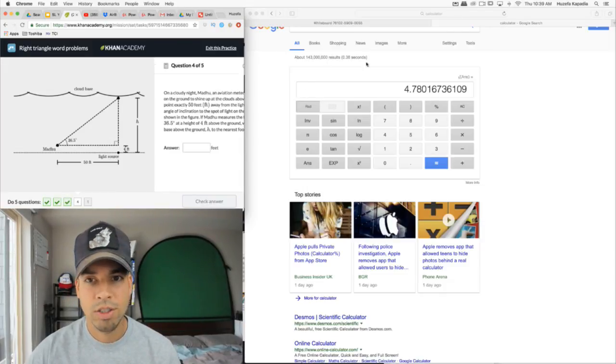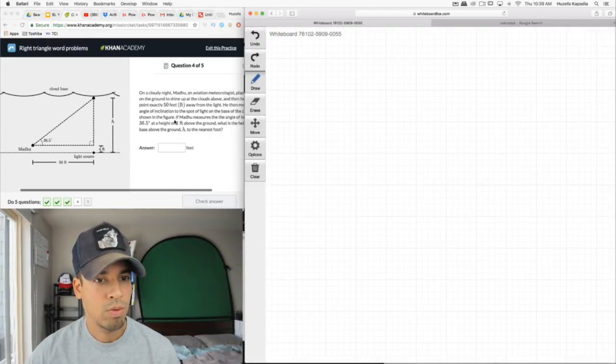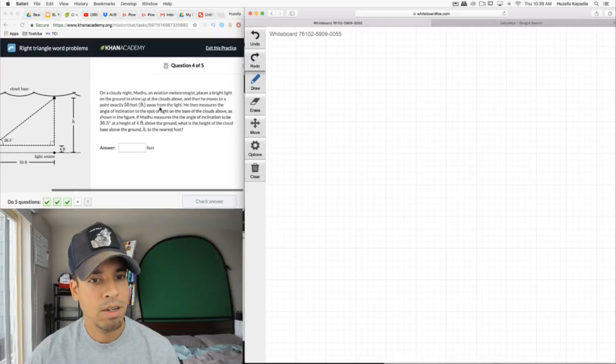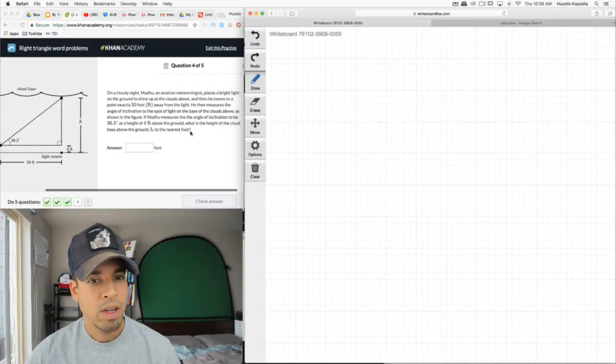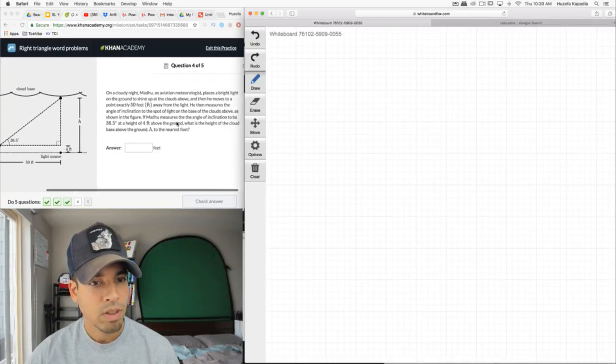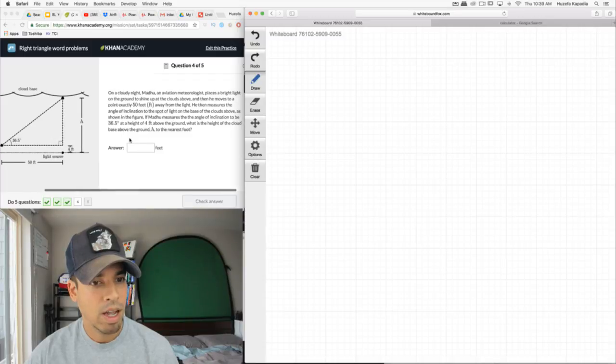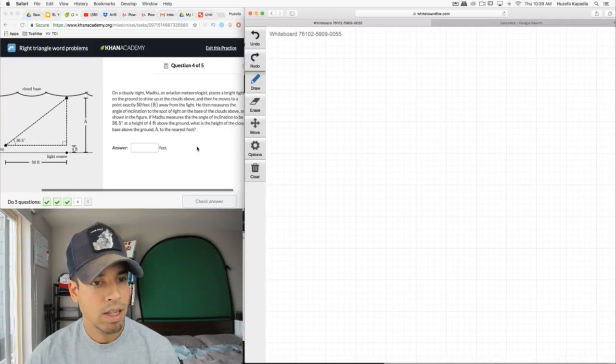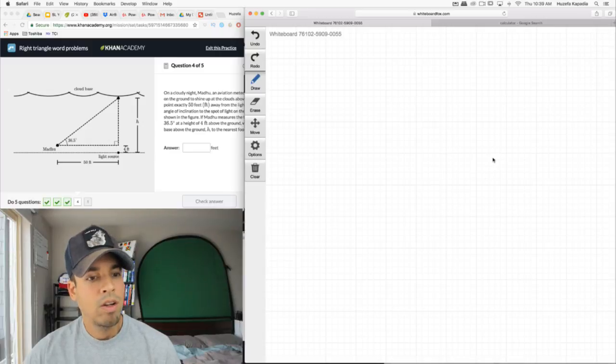All right, next question. On a cloudy night, Madhu, an aviation meteorologist, places a bright light on the ground to shine up at the clouds, then moves to a point exactly 50 feet away from the light. He measures the angle of inclination to the spot of light on the base of the clouds at 36.5 degrees at the height of 4 feet above the ground. What is the height of the cloud base above the ground h to the nearest foot? This means we're going to calculate this value and then add 4 to that.